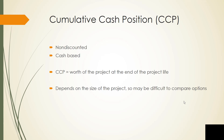We can also talk about the cumulative cash position. This is a cash-based, non-discounted criterion. The cumulative cash position is the worth of the project at the end of the project life — you simply add up all of your positive and negative cash flows and see what the answer is. The difficulty with using this is that it depends on the size of the project, so if you're comparing two options costing $10 versus $10,000, it's difficult to compare the two.